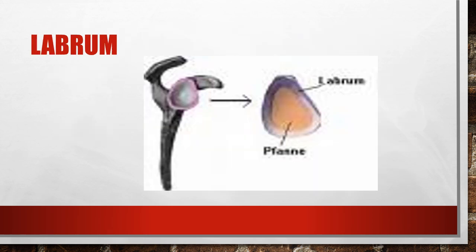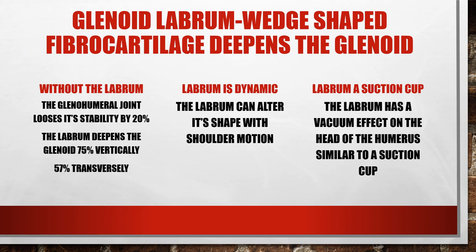The labrum is a fibrocartilage structure that creates a cup around the glenoid. Without the labrum, the glenohumeral joint loses 20% of its stability. This fibrocartilage disc deepens the socket — 75% in the vertical plane and 57% transversely — helping to seat the humeral head deeper into a stable structure.